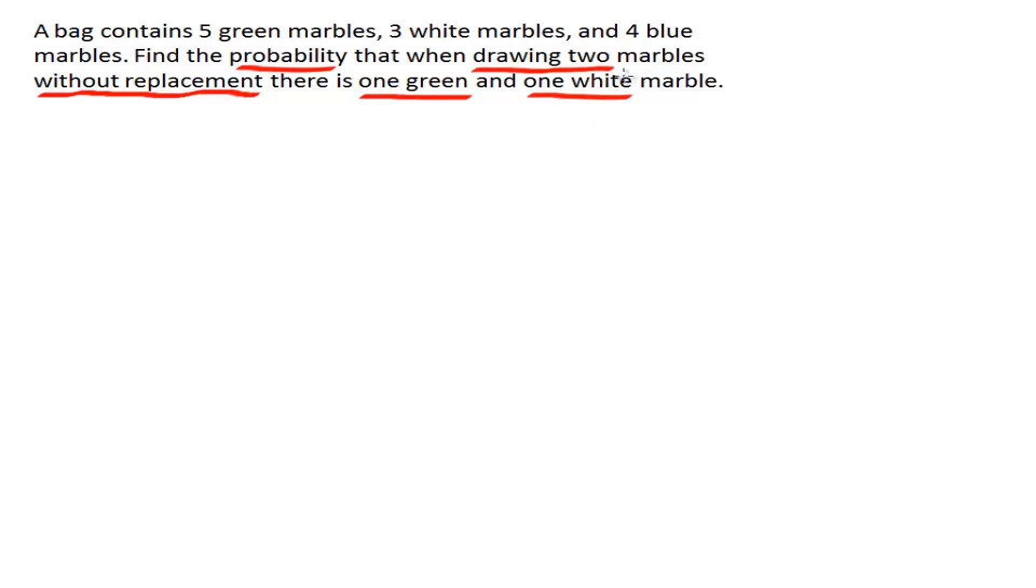They tell us that the selections are going to be made without replacement. That indicates that this scenario will be a dependent case. So it's the dependent rule for multiplication rule.